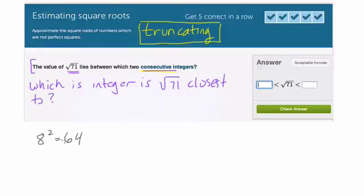However, what happens when you go to the next integer? Well, 9 squared is 81, and 81 is above 71. So somewhere in between 8 and 9 is the square root of 71.